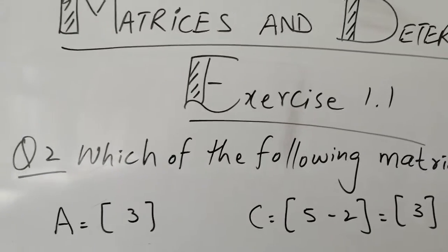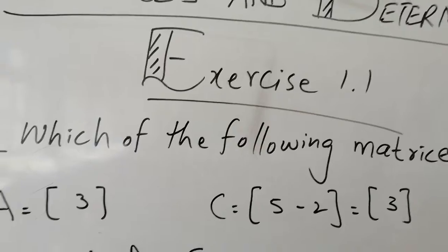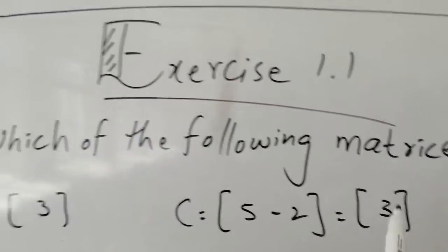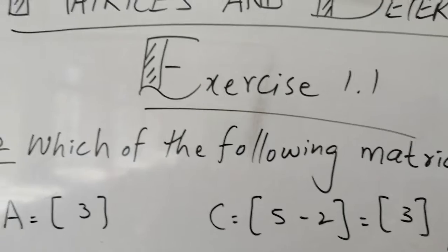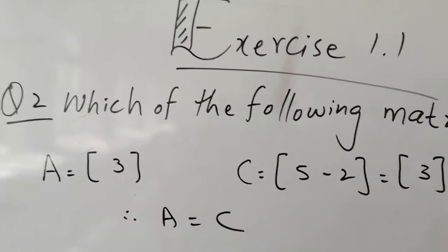The first matrix I have taken A. In matrix A the entry was 3. And in matrix C was 5 minus 2. So when we subtract 5 and 2, what is the answer? 3. So the order of both matrices A and C are the same, one by one. And the entry is the same. That's why A and C will be equal.